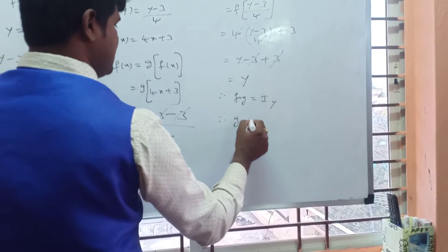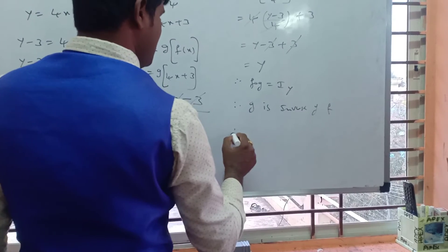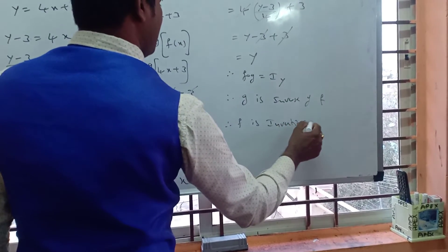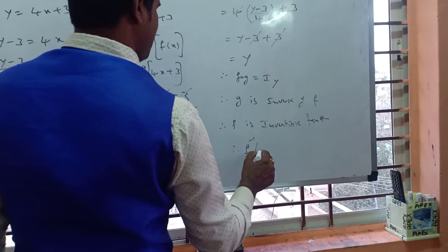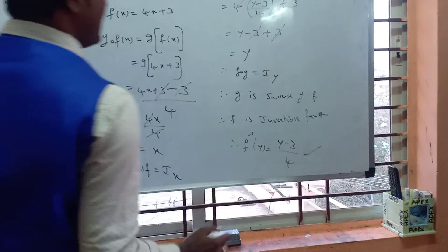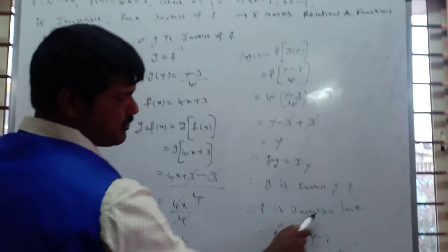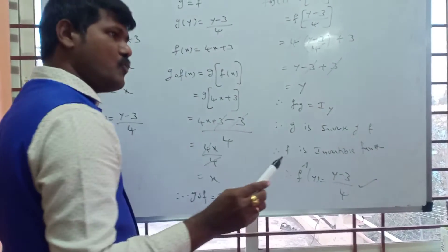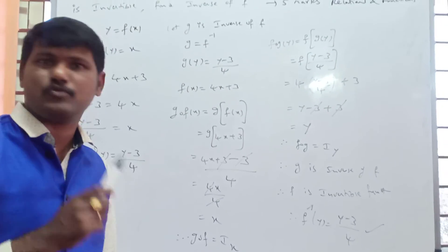Therefore, g is the inverse of f. Therefore, f is an invertible function. Therefore, f⁻¹(y) = (y − 3)/4. The question asked to prove that f is invertible and find the inverse of f — both are now proved. This is one very important question out of 4 questions in relation functions.